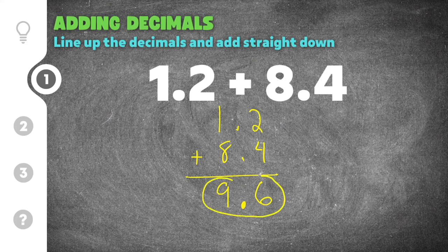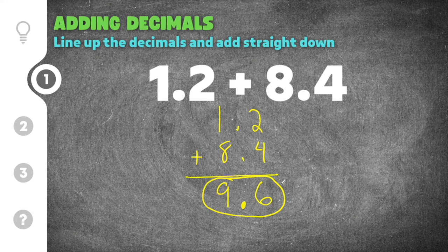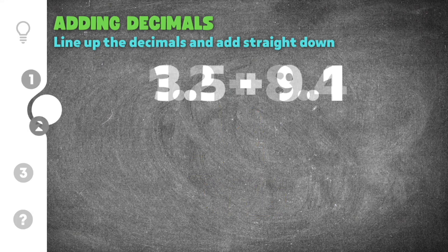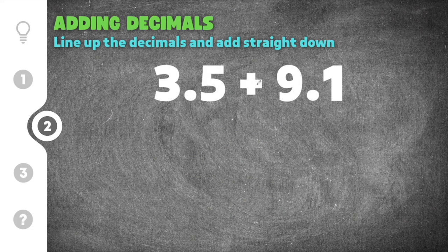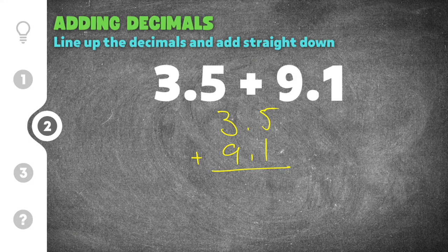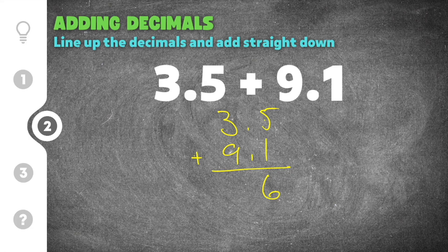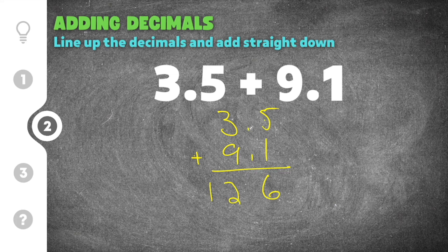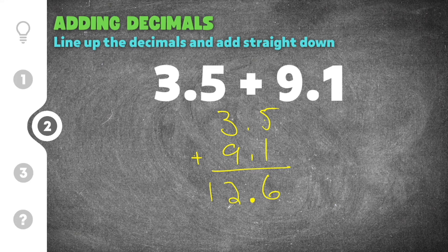Moving on to our second practice problem, this problem gives us 3.5 plus 9.1. In order to add decimals I'm going to rewrite these so that the decimal points are lined up, and I'm going to add from the right to the left. So I'm going to add 5 plus 1 and I'm going to get 6, and then 3 plus 9. Well, 3 plus 9 is 12, and then to finish our answer we have to move the decimal point straight down. So I'm going to move it down into this spot right here and our answer is going to be 12.6.